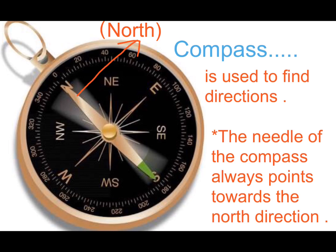This is a compass. Dear students, you know that there are four directions: north, south, east and west. We locate places on a map using these directions. In early times, sailors used a compass to find their way while sailing. A compass looks like a watch and has a needle which always points to the north. Once you know where north is, you can find the other directions.